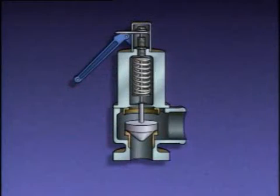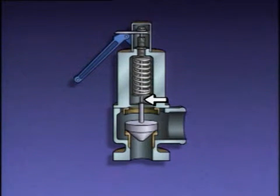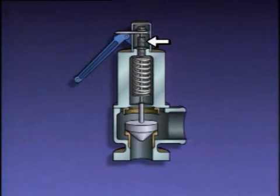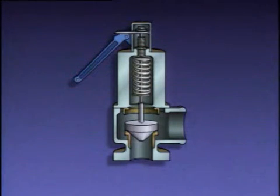This safety valve consists of a valve body, a disc, a seat, a spring, a valve stem, an adjusting screw, a lock nut, and a manual release lever. The manual release lever is used to test the operation of the safety valve.